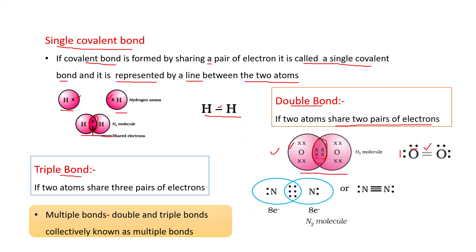Triple bond: if two atoms share three pairs of electrons, then a triple bond is formed. Like nitrogen — each nitrogen atom shares three pairs of electrons, and in these shared pairs, each nitrogen atom contributes three electrons. A triple bond is represented by placing three parallel lines between bonded atoms, and the octet of each nitrogen atom is completed. These types of structures in which we represent the valence electrons are known as Lewis dot structures.